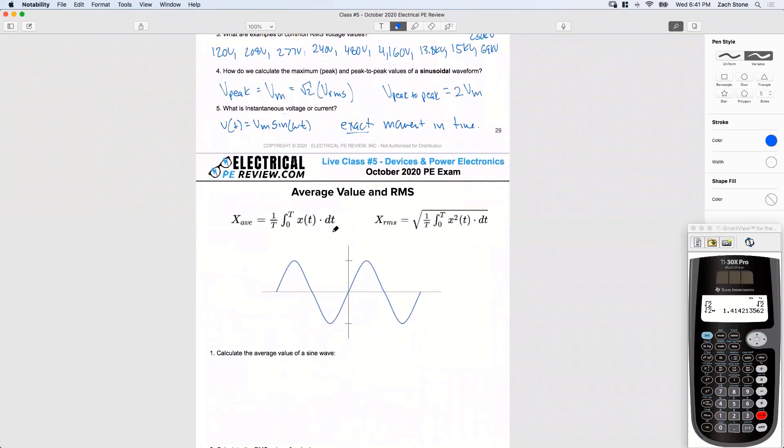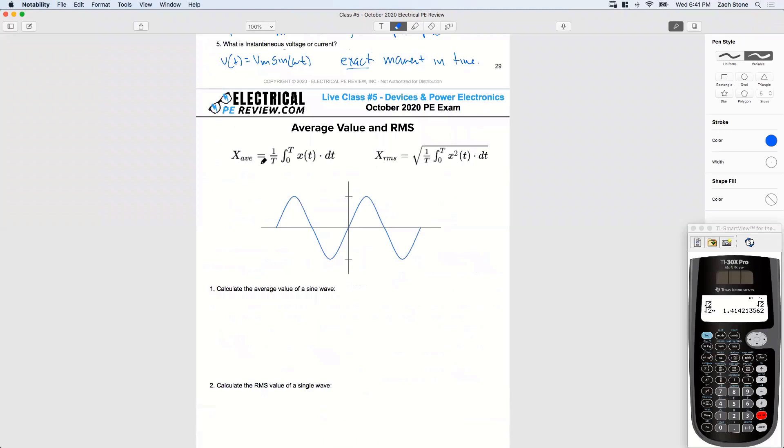Let's take a look. So in your handbook, this is the notation that your handbook uses. This x of t right here is going to be your instantaneous function.